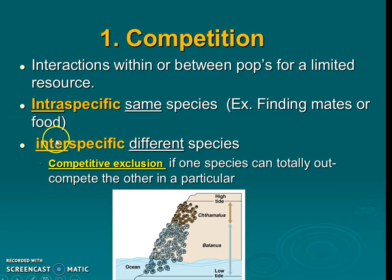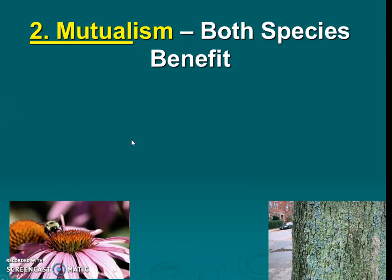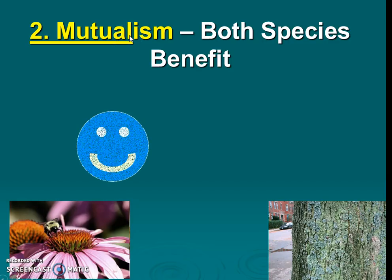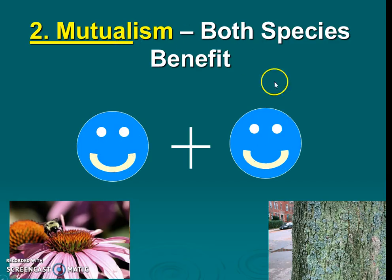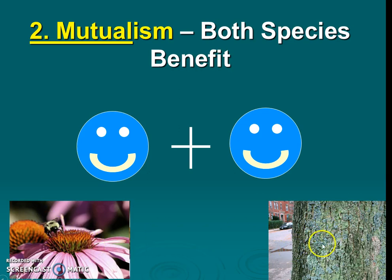The next relationship is mutualism, where both species benefit. Examples include a pollinator getting nectar or pollen from a plant — both benefiting — and lichen, which is a mutualistic relationship between a fungus and algae on a tree. It's a healthy relationship for both organisms involved.